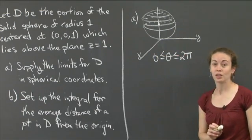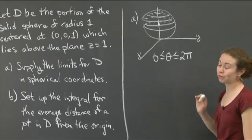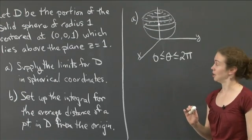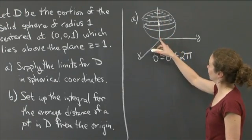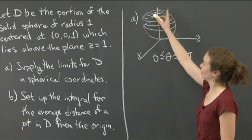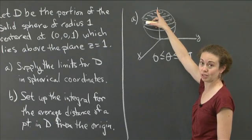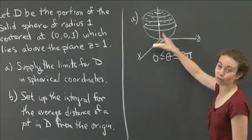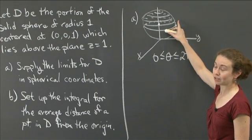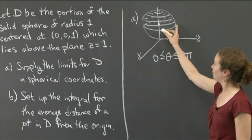Now the harder ones are going to be rho and phi. But in fact, actually phi is not that hard either. Phi, I notice I'm starting, phi is the angle that I make from the z-axis to any given point. So I notice that I certainly am including the point where phi is 0. And then I'm going all the way down to a point out here, which is a 45 degree angle with the z-axis. So phi is also easy. It's actually just between 0 and π over 4.